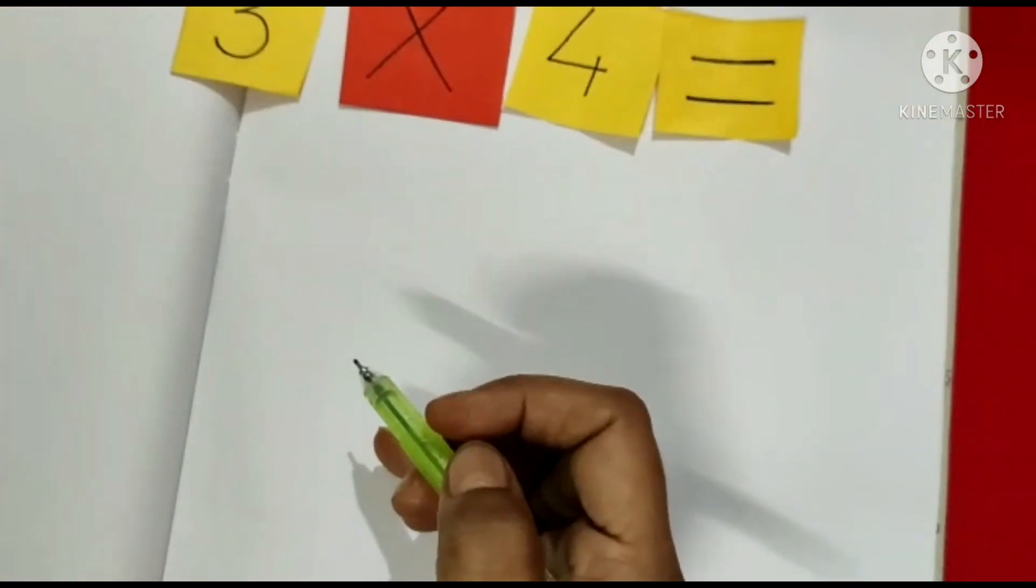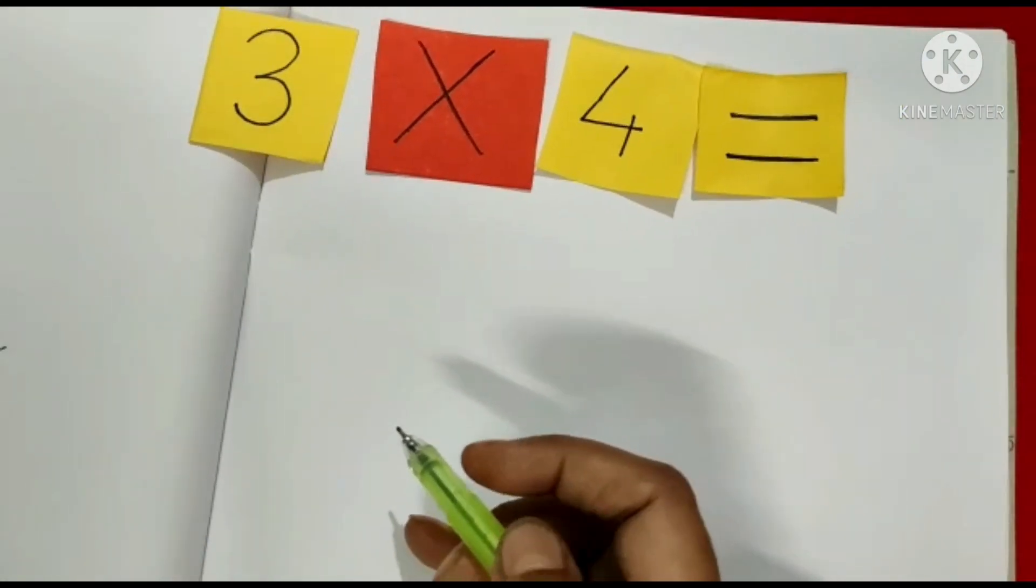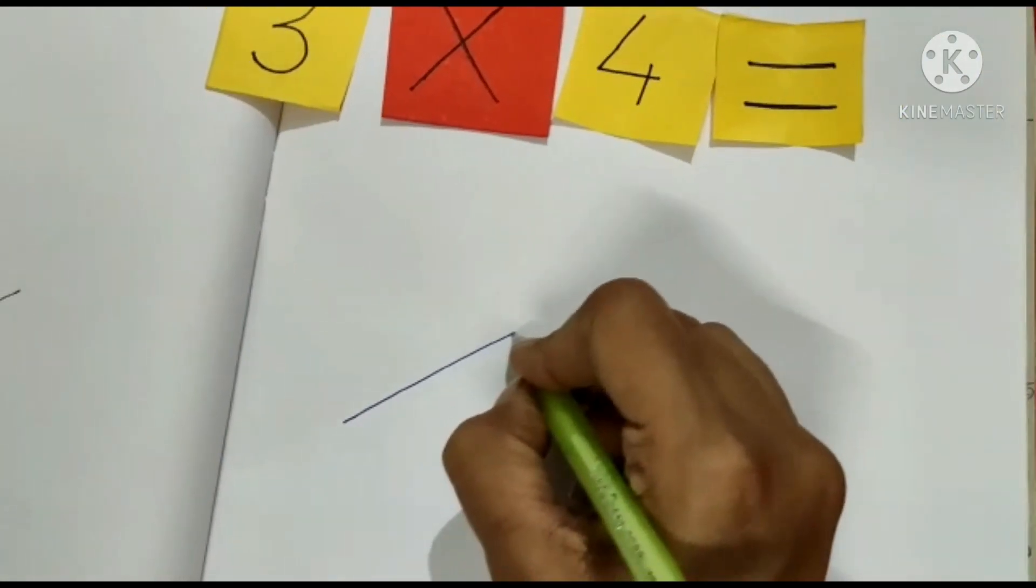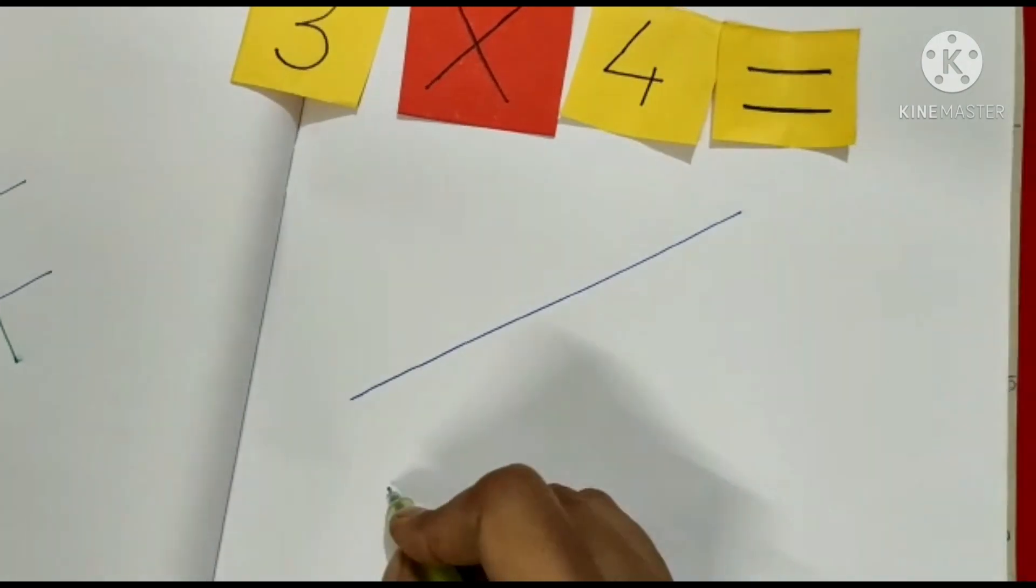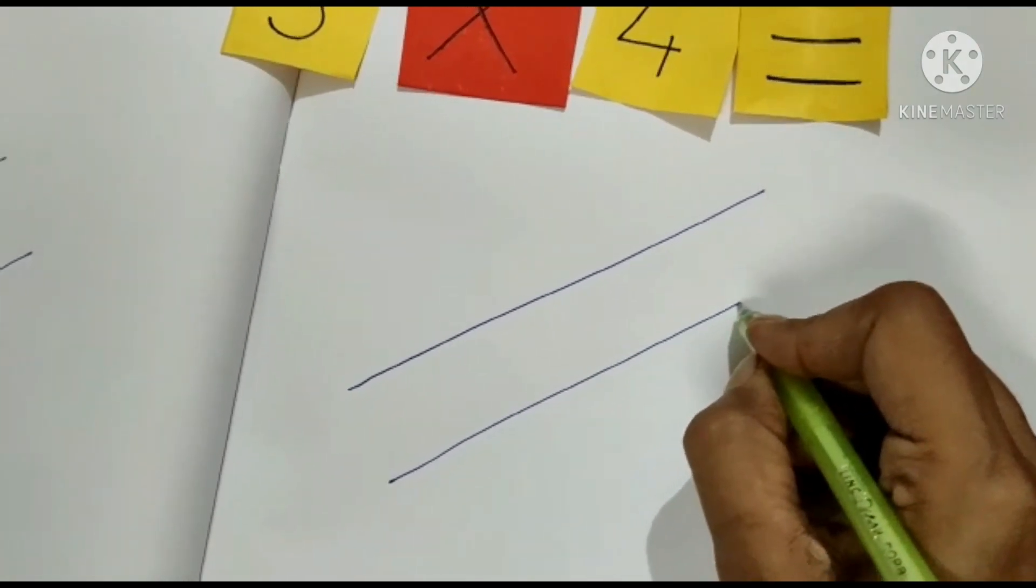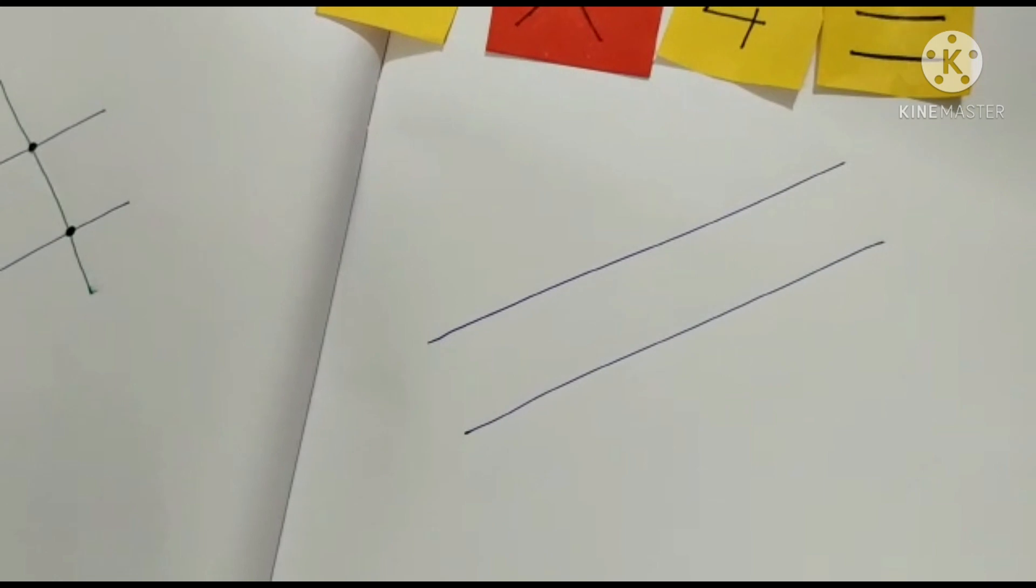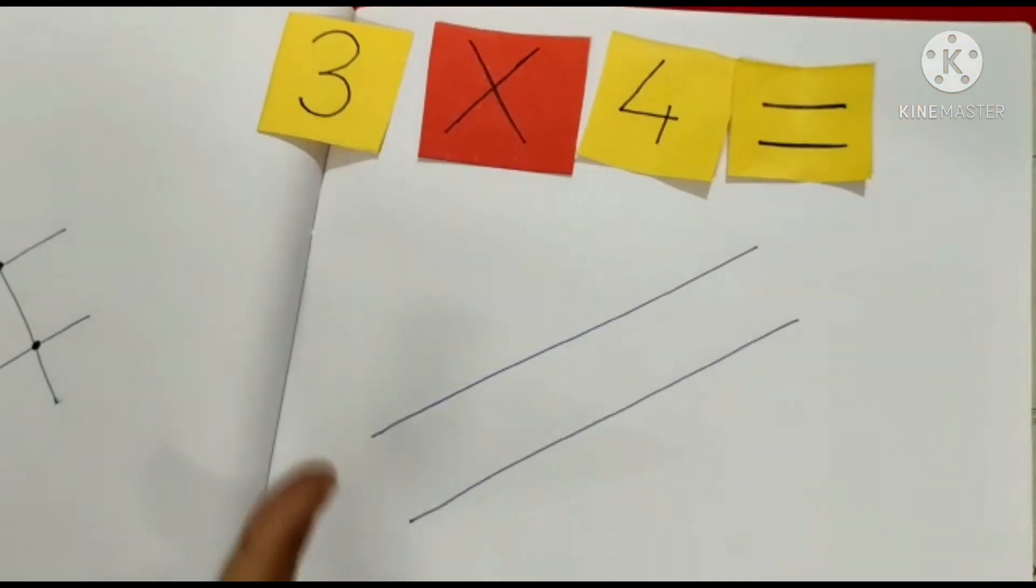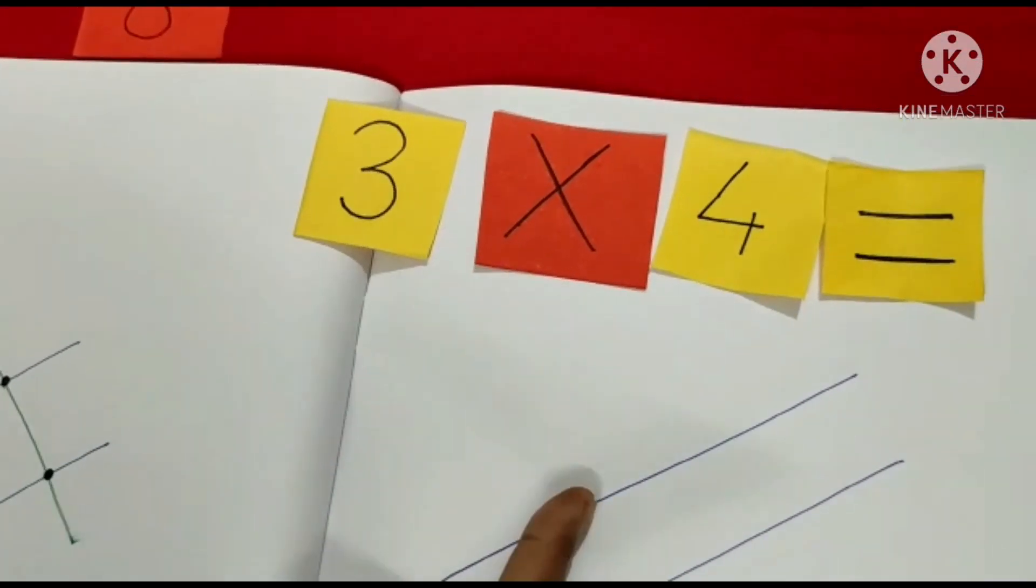We have learnt to draw the lines of this process. How many here? One, two, two lines. No, this three we will draw.